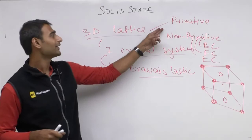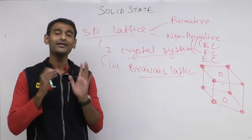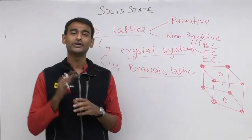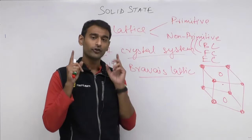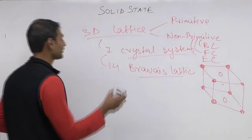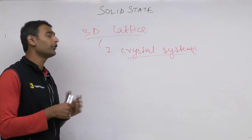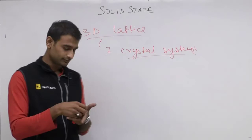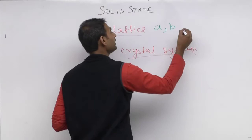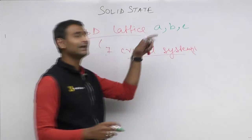Unit cell can be primitive or non-primitive. Non-primitive unit cells are body-centered, face-centered, or edge-centered. Just like for a 2D lattice we needed a, b, and the angle between them, for a 3D lattice we need a, b, c, and the angles between them. Depending on the relationship between the three axes and angles, we define 7 types of crystal system.